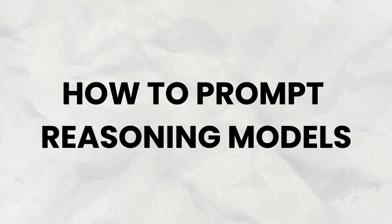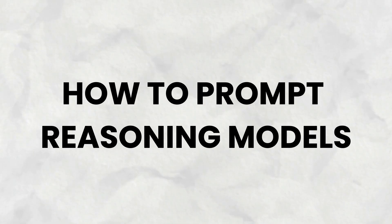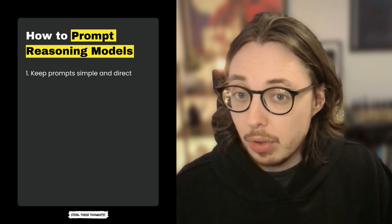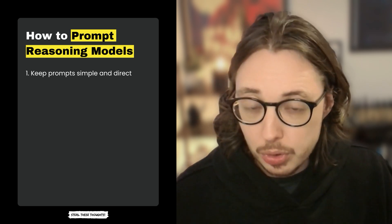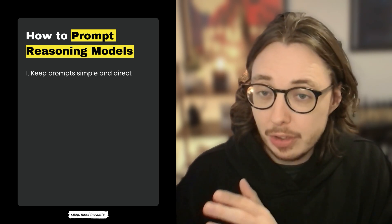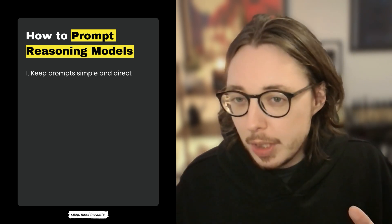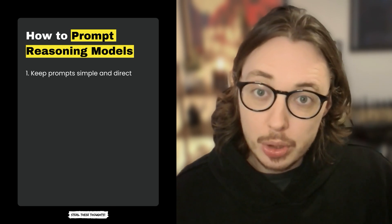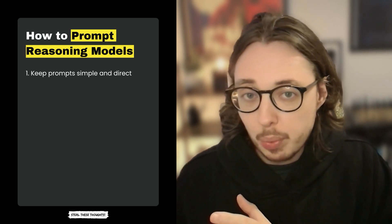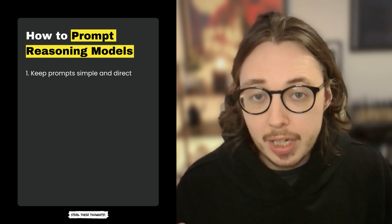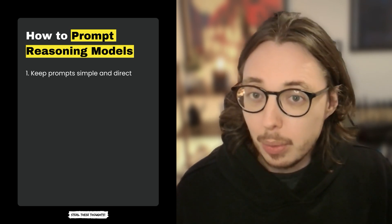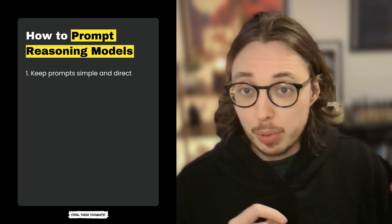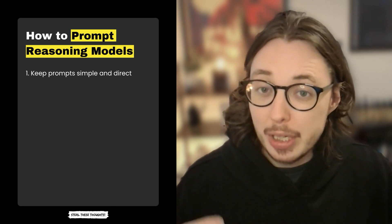Now let's cover some best practice prompting tips for reasoning models. Here are seven tips. First, keep prompts simple and direct. You don't need the heavy prompt engineering techniques used with GPT models. Reasoning models work best with brief, clear instructions, so avoid unnecessary complexity. They're conversational — have a conversation and work things through. Don't just prompt and ghost; more interaction leads to better outputs.